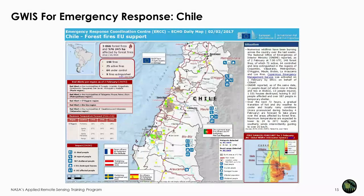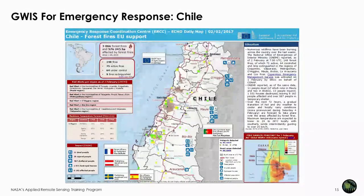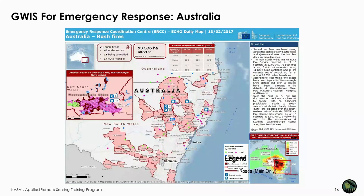Currently, GWIS has been used operationally by the Emergency Response Coordinating Center of the European Commission. They coordinate disaster relief worldwide on behalf of the European Commission, which is a major donor in case of disasters. Here is an example of a map created of forest fires in Chile in February 2017. On the bottom left, the fire danger forecast map for the next day is included in the information packet provided to fire managers.